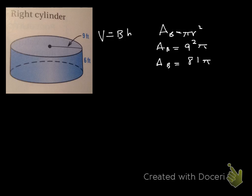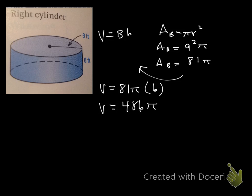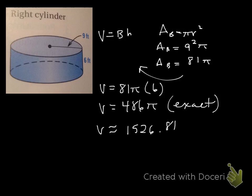I'm going to leave it in terms of pi to keep it easier to work with. Plugging back in: volume equals 81π times the height, which is 6 feet. So volume equals 486π. That's the exact answer. If you want to approximate it, multiply 486 times pi on your calculator and you get approximately 1,526.81 cubic feet.